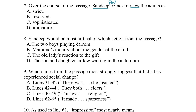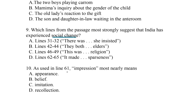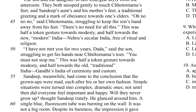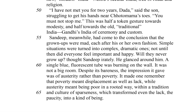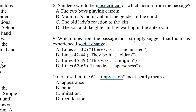Similarly, in question eight, Sandeep would be most critical of which action in the passage. So we're going to be looking again for things that Sandeep has opinions about — maybe critical opinions. Question nine: which lines from the passage most strongly suggest that India has experienced social change? So we're looking for proof of social change in India and lines that indicate it. And finally, question ten is a vocab question: as used in line 61, 'impression' most nearly means something. Let's hop over to line 61 and underline it — there's line 60, there's line 61, and there's the word 'impression.' Let me just mark this with question 10, and that's it.